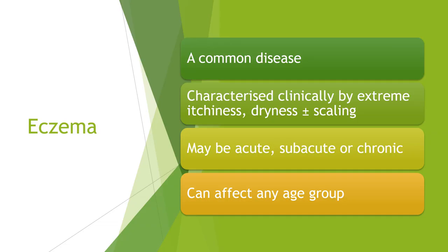First we talk about eczema, which is a very common skin disease. It is characterized clinically by extreme itchiness, dryness, and scaling. It may present with acute onset, or it may be sub-acute, or it may become chronic where a patient may have it for months or years. It is more common in children but can also happen in adults.